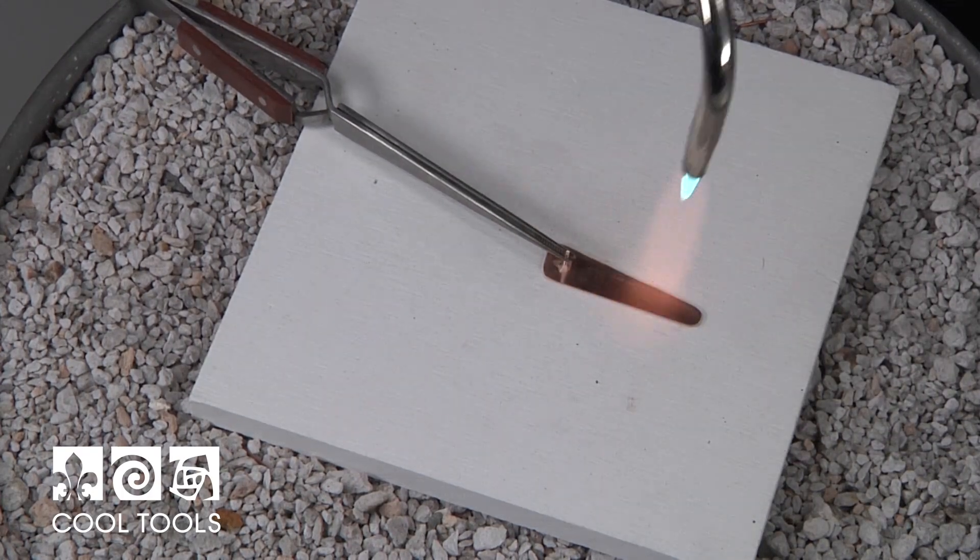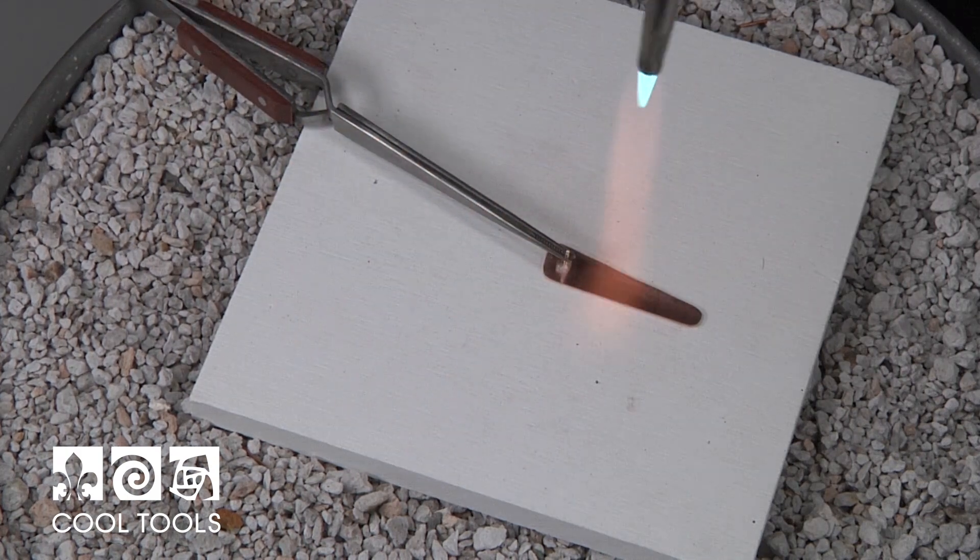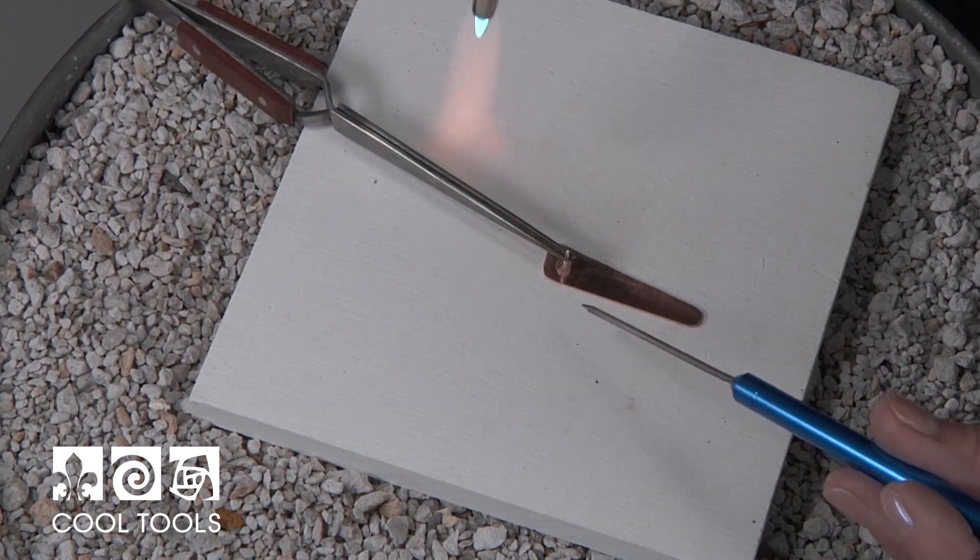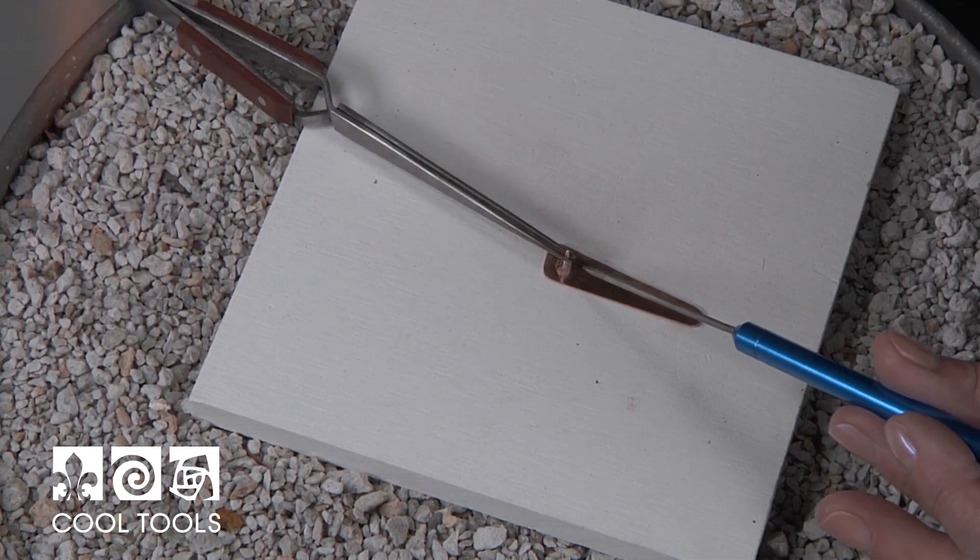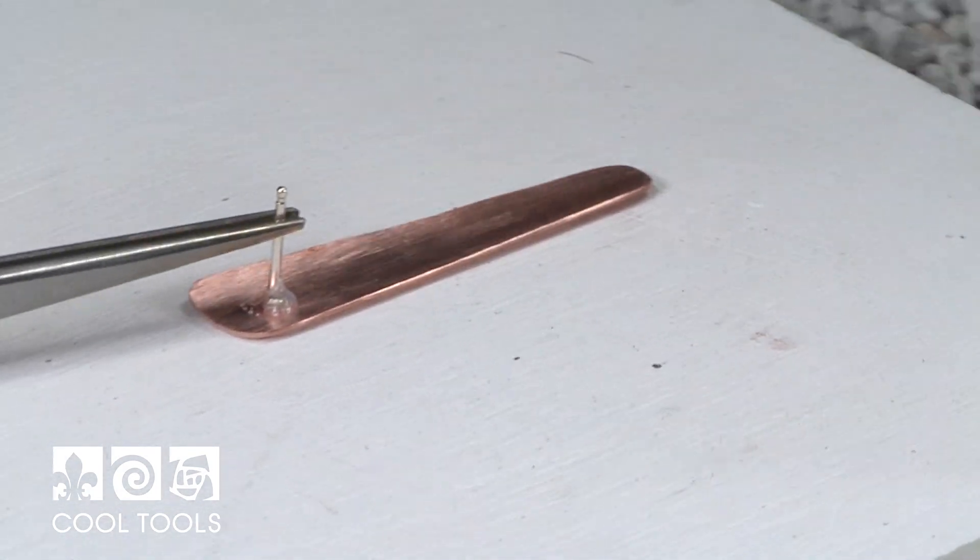I'm first going to go in and just pre-dry my flux. There's a lot of moisture in there and what happens when the moisture evaporates you can see the solder jumping around and it's the steam coming out of that flux that's causing that to happen.